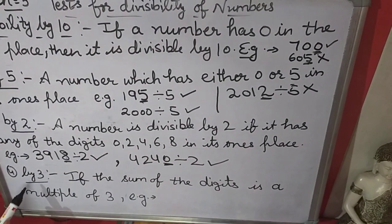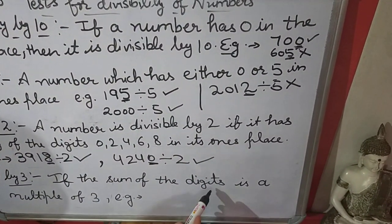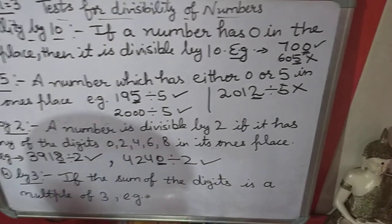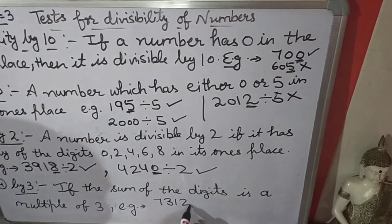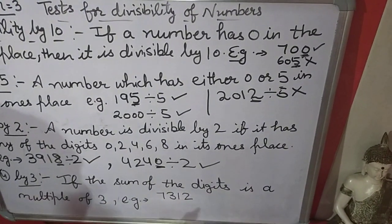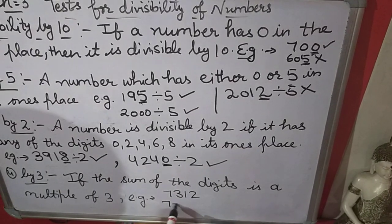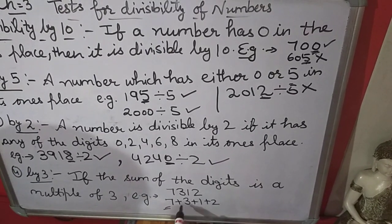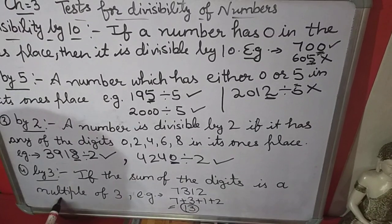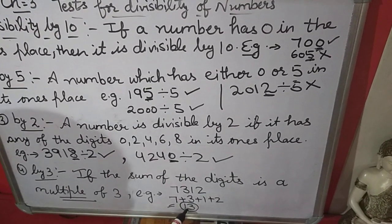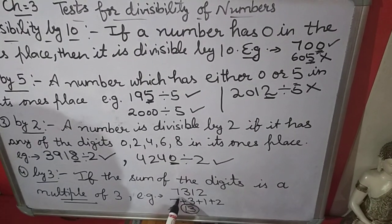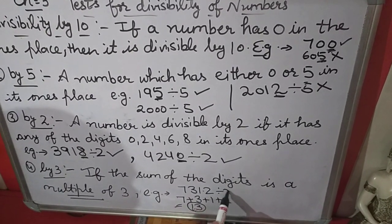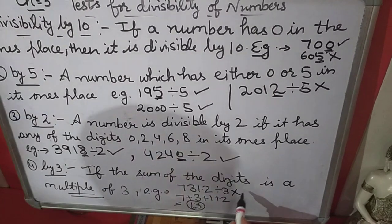Now next is divisibility by 3. If the sum of the digits is a multiple of 3, then the number is divisible by 3. For example, the number 7,312 — you have to check if it is divisible by 3 or not. We add all digits: 7 plus 3 plus 1 plus 2 equals 13. But 13 is not in the table of 3, so this number is not divisible by 3.